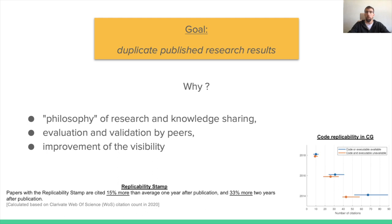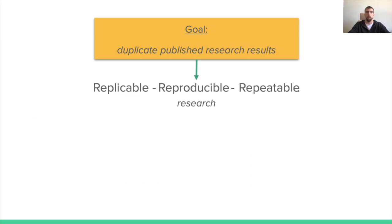It might require us to run and use the published approach with different settings than those used by the authors. Duplicating the original results is mandatory to validate that detected problems do not appear with the settings used by the original authors. Finally, it has been shown in several research communities that the number of citations of a published paper can be significantly increased when the author shares the code or binaries used for their experiments. This leads me to the concept of replicable, reproducible, and repeatable research.